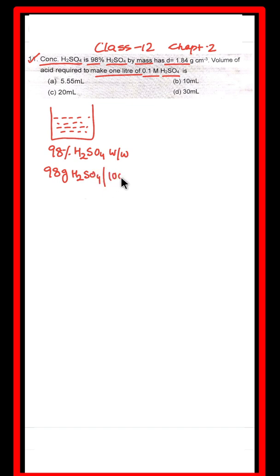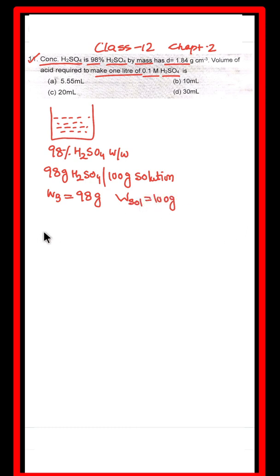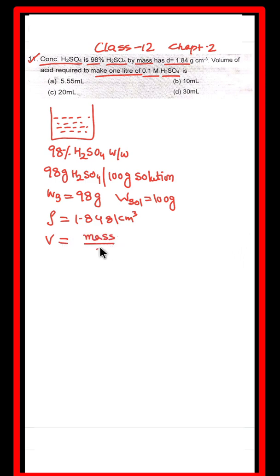It is given as 98% H₂SO₄ by mass, which means 98% sulfuric acid is present in 100 grams of solution. So 98 grams is the mass of solute and 100 grams is the weight of solution. Density is given as 1.84 g/cm³. Volume of solution equals mass of solution divided by density.